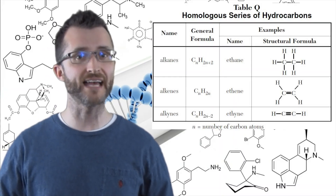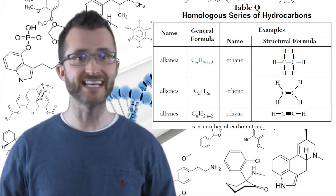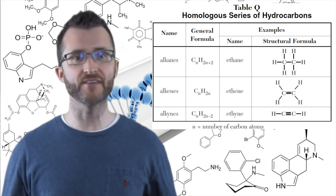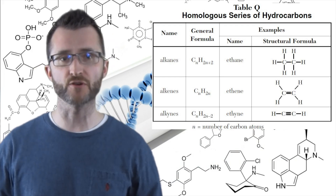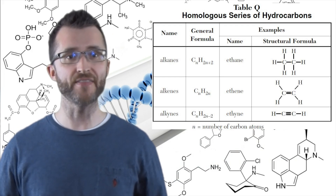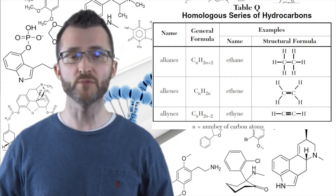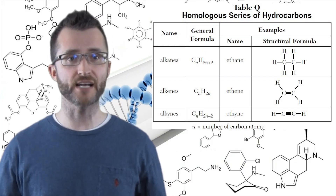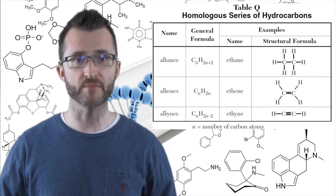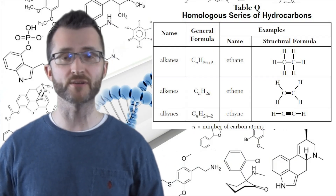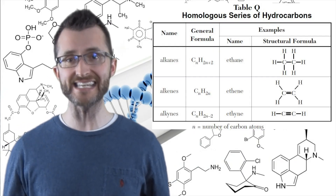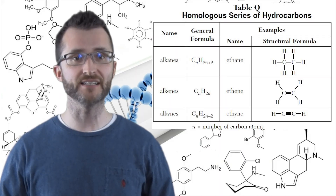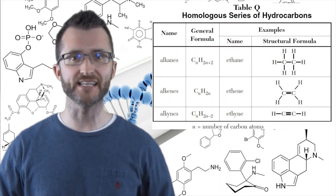Notice how alkanes always end in the ending -ane. Alkenes and alkynes have different general formulas and they contain double or triple bonds. We consider them to be unsaturated hydrocarbons. Notice how alkenes always have the ending -ene, and alkynes always have the ending -yne.